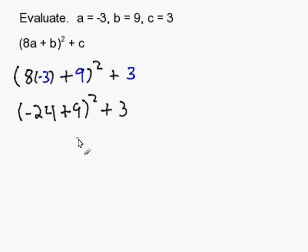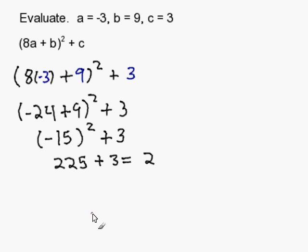Negative 24 plus 9 is negative 15 squared plus 3. Negative 15 squared is 225 plus 3. And my resulting answer is 228.